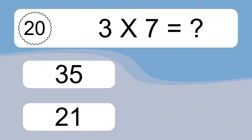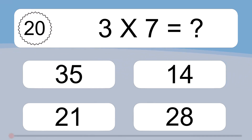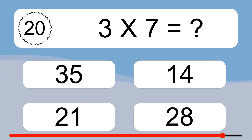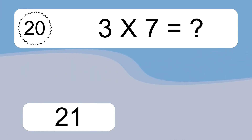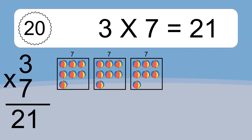3 times 7 equals what? 3 times 7 equals 21. We have 3 boxes and each box has 7 colorful balls inside. If you count all the balls in all the boxes together, you will have 3 times 7 balls. This equals 21 balls.